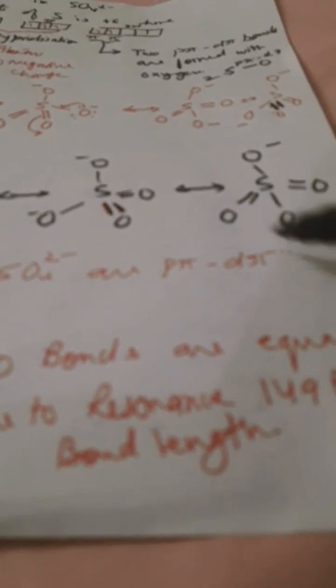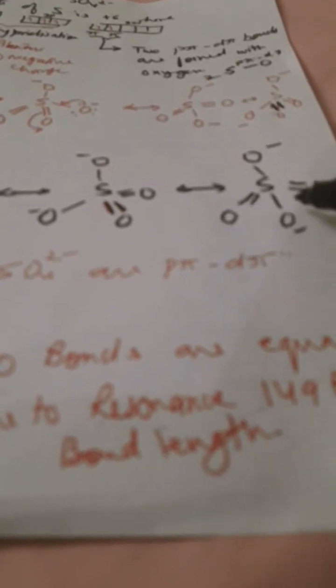In the last structure, the oxygens are opposite to each other, and in the double-bonded structure, these are also opposite to each other. That is what you have to remember.